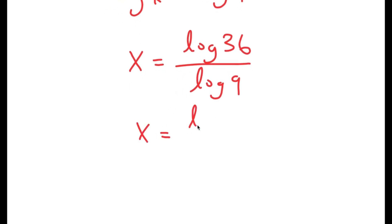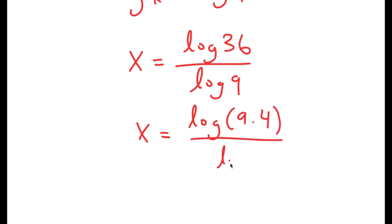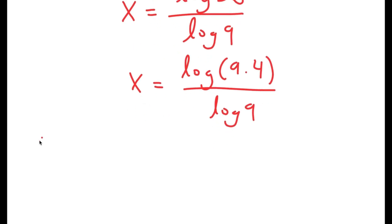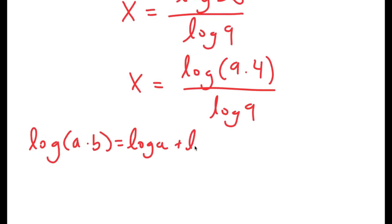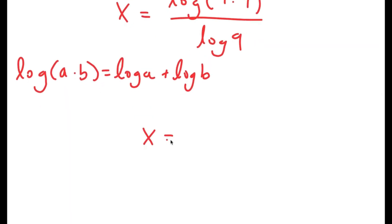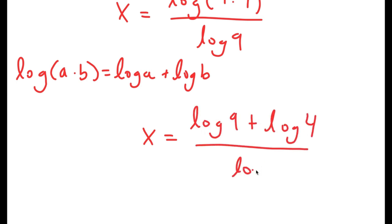Now I'm going to rewrite log 36 as log of 9 times 4. I did this because I can use the property log of a times b is equal to log a plus log b. This turns into log 9 plus log 4, and I have this over log 9.